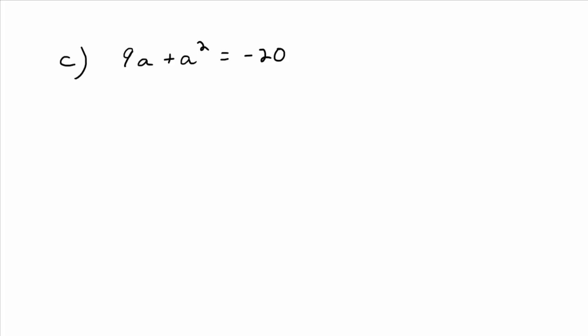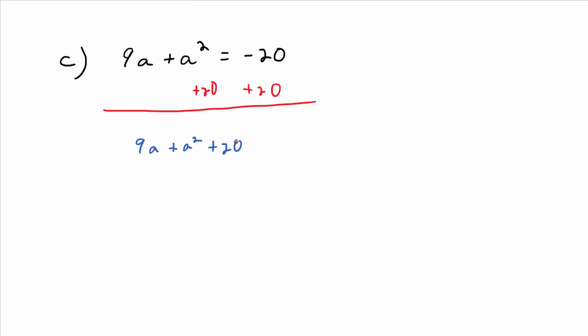What do I have to do in this one? Before we can do anything, we have to get zero on one side, everything else on the other, right? So what's an easy way to do that? I'm going to add 20 to both sides, but if I write it down as is, I get something weird looking. I get 9a plus a squared plus 20.